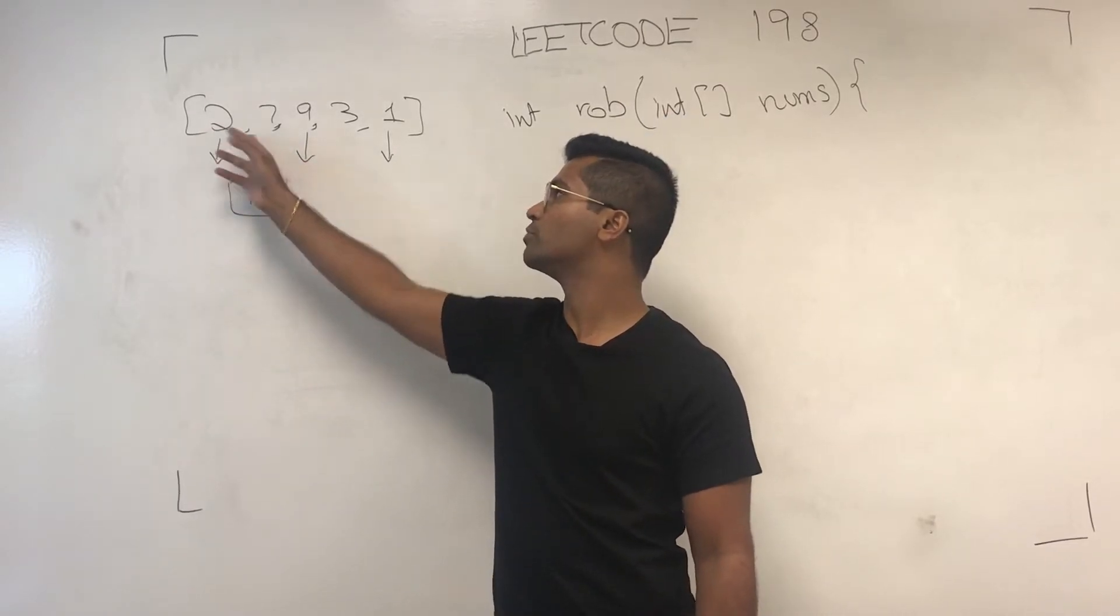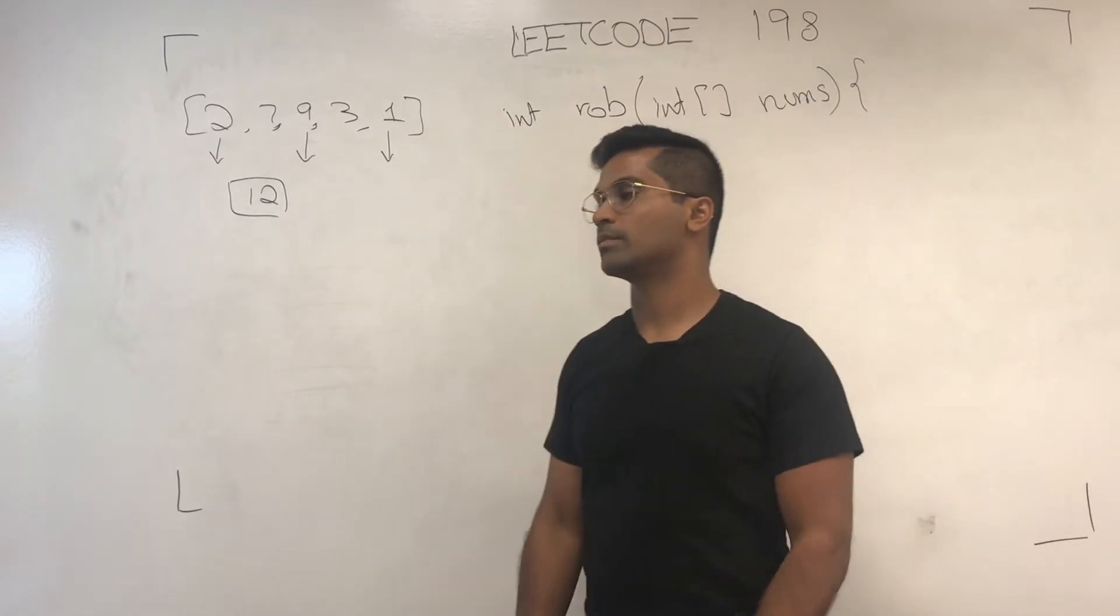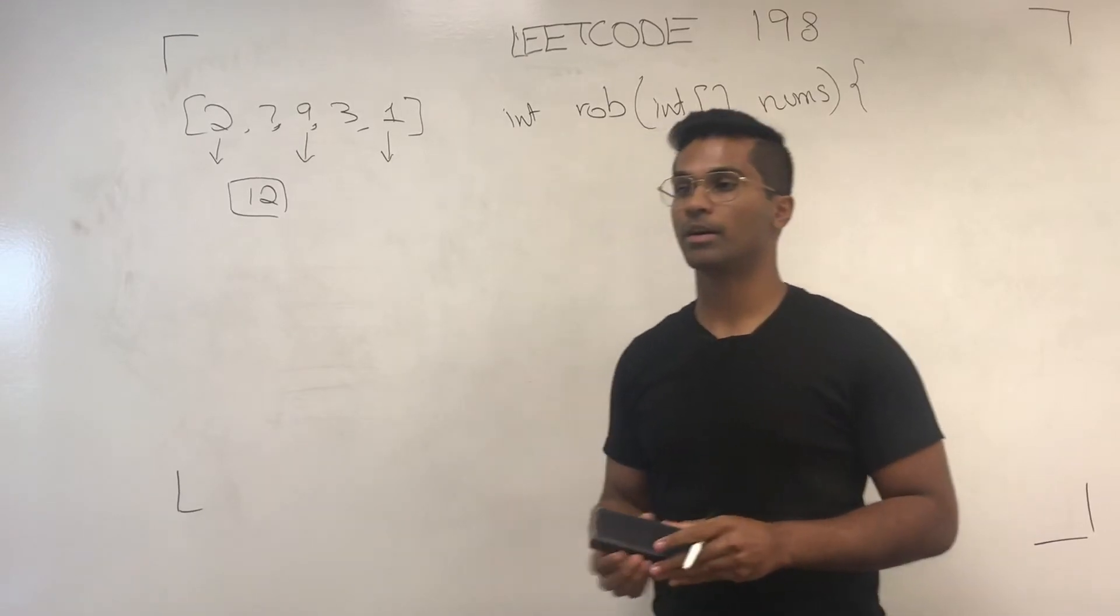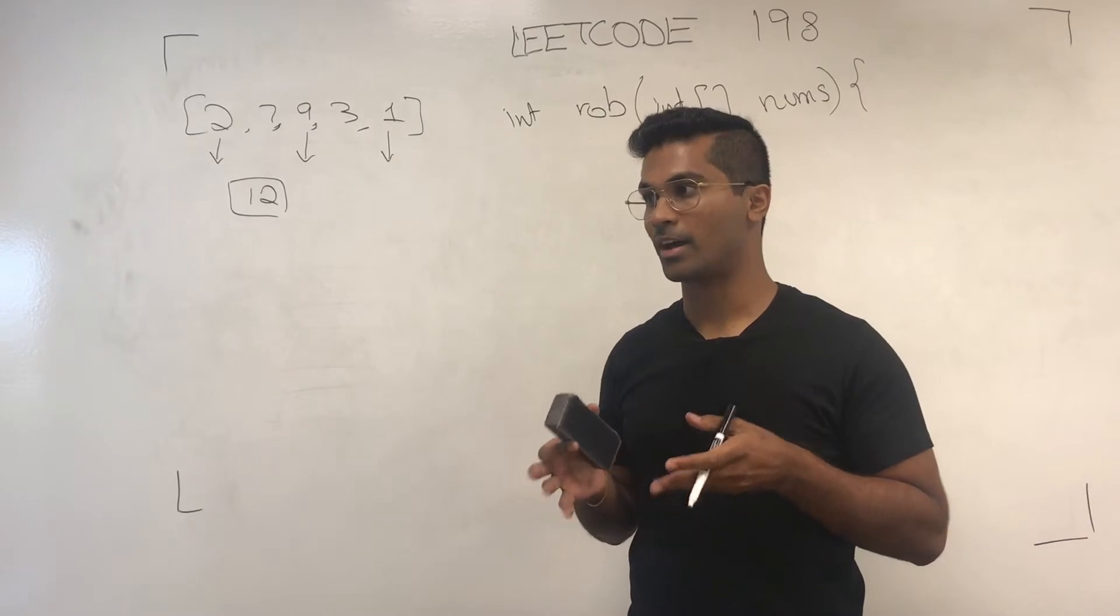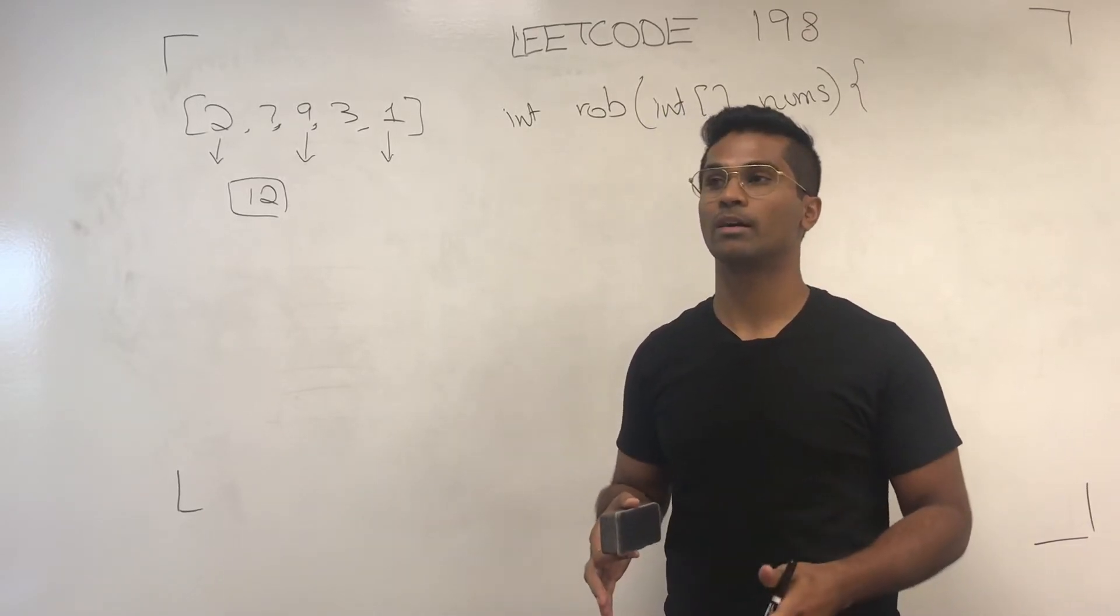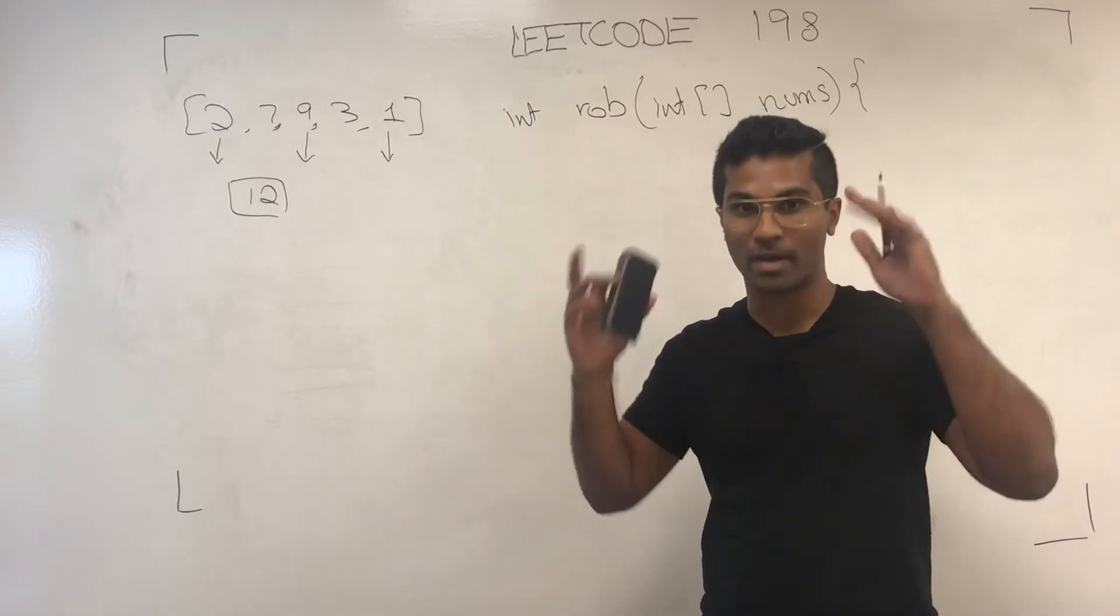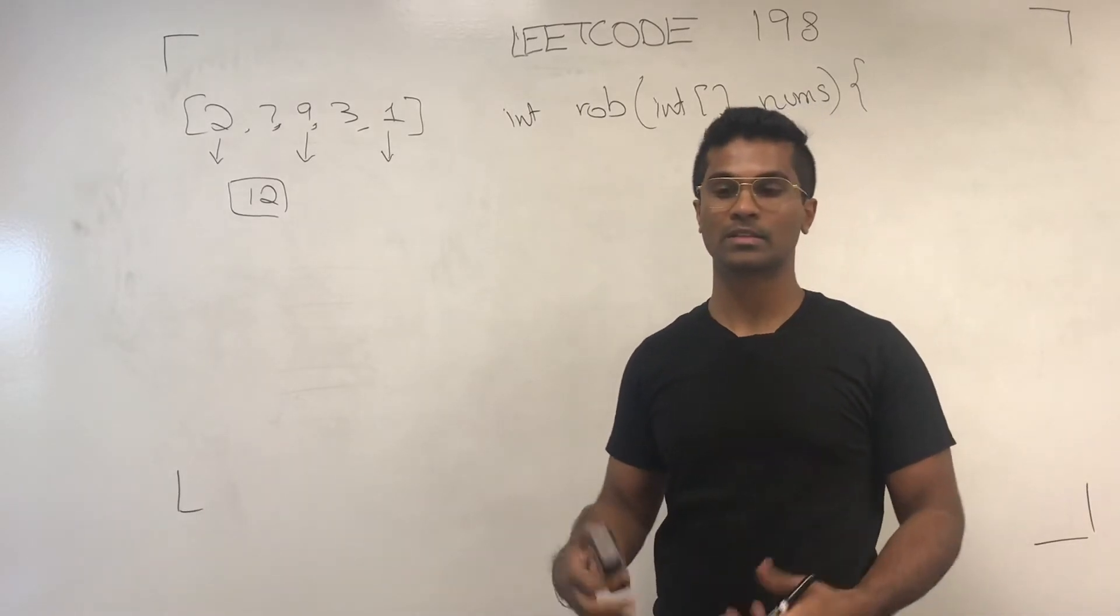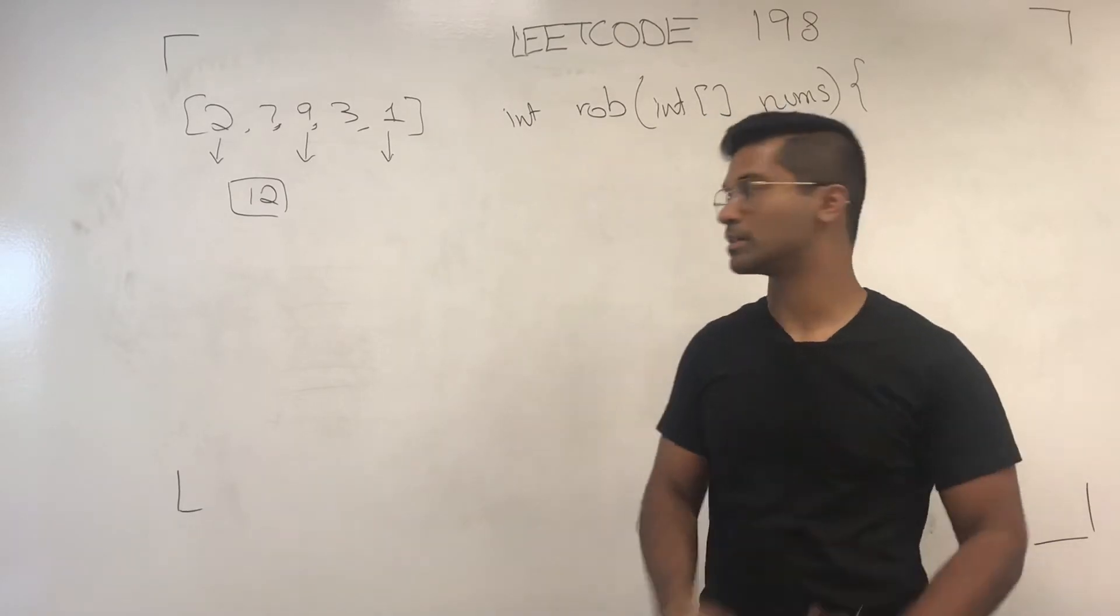He can rob any house but he can't rob two consecutive houses. Now let's build the sub-problem. What it is, is am I going to rob the house that I'm at now? If so, what's the value of this one plus the value of the maximum sub-problem two houses behind me? Or if I skip this, the maximum I can rob till here is the maximum I robbed to the previous house.